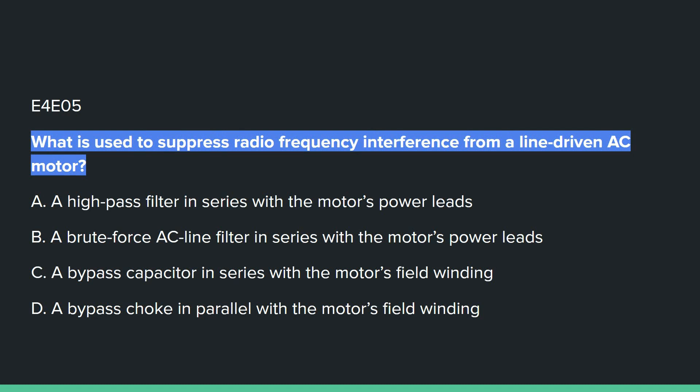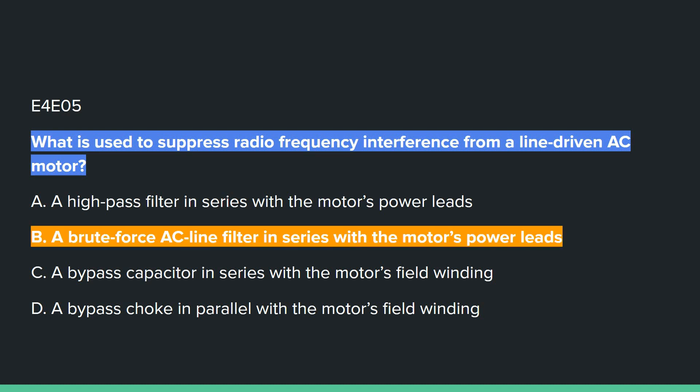E4E05: What is used to suppress radio frequency interference from a line-driven AC motor? Answer B: a brute force AC line filter in series with the motor's power leads.